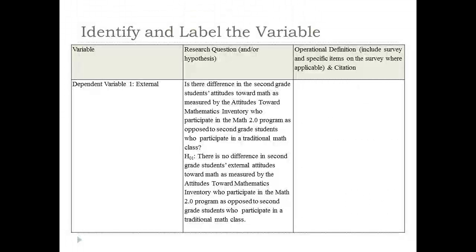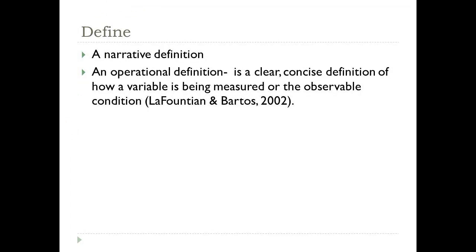I'm going to start by identifying the dependent variables. Looking at the hypotheses, the attitudes toward mathematics inventory actually has three subscales, so I have three dependent variables. One of the dependent variables is external motivation. In my chart I'm going to label dependent variable 1 as external motivation. Now let's talk about operational definitions. An operational definition is a clear, concise definition of how the variable is going to be measured or observed — what it looks like. When doing operational definitions, it's also appropriate, based on the theoretical framework you're using, to define the variable in narrative form based on the literature.